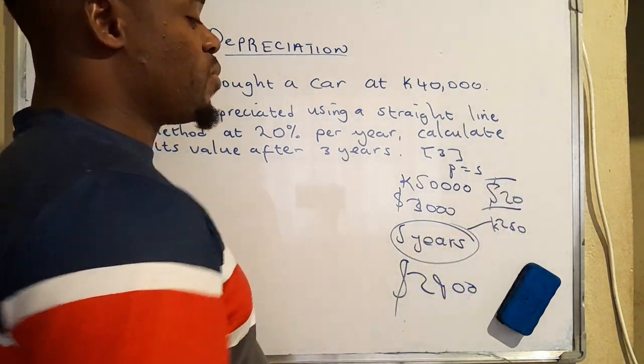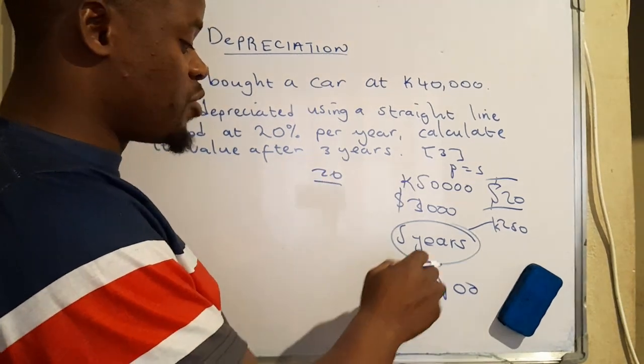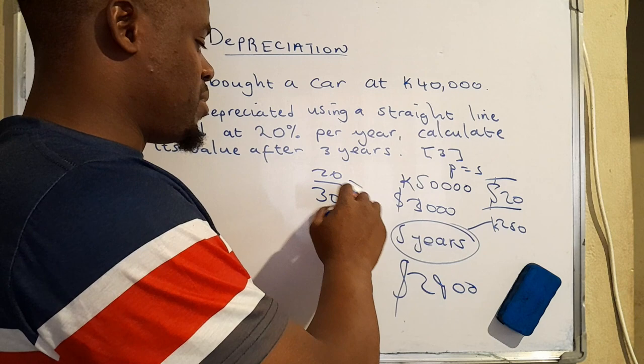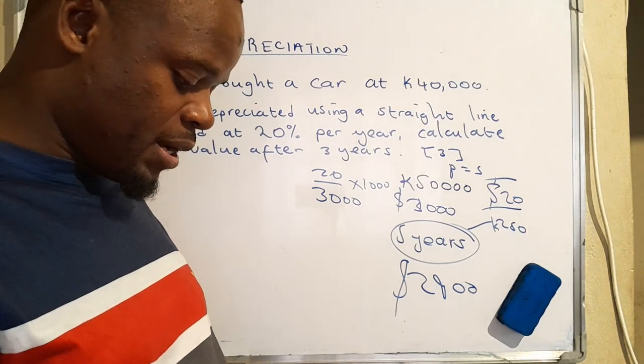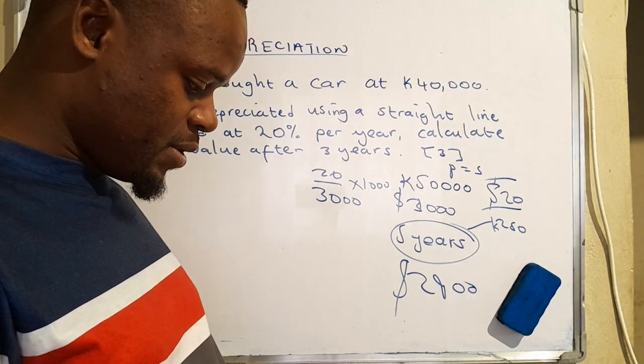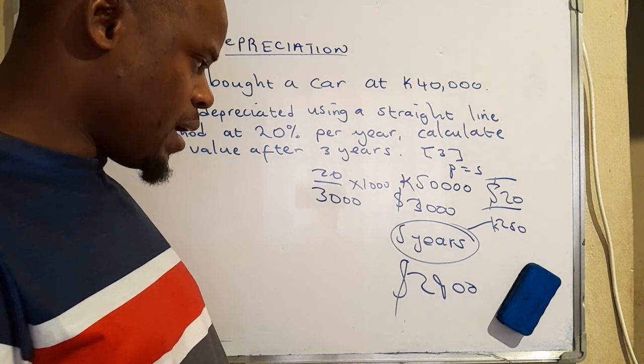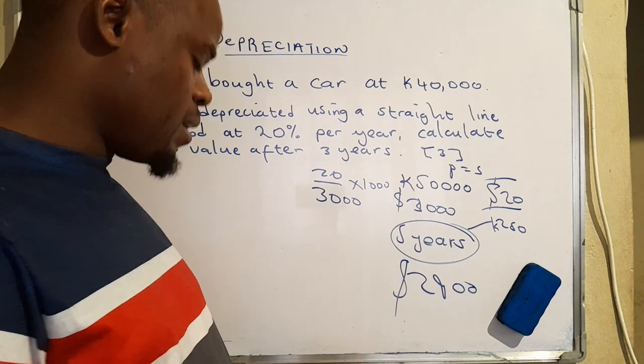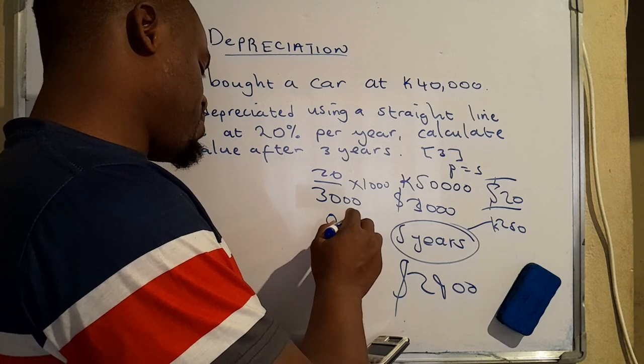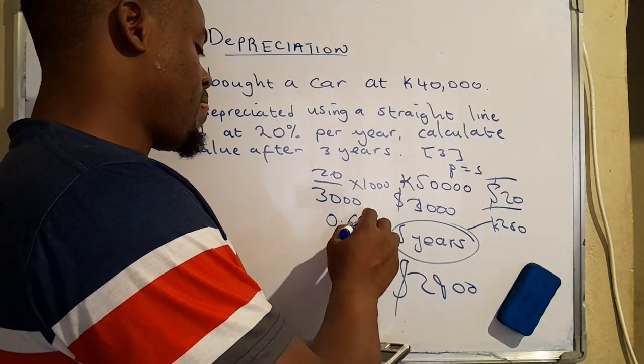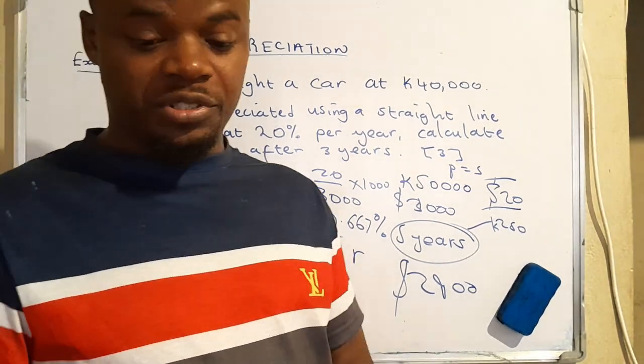We can actually find the percentage of this. We can calculate 20 over the actual price at which it was bought, which is three thousand US dollars, times 100. And then we're going to have 20 over three thousand, then times 100. It's actually depreciating at the value of 0.667 percent. So this one here is actually the rate of depreciation.